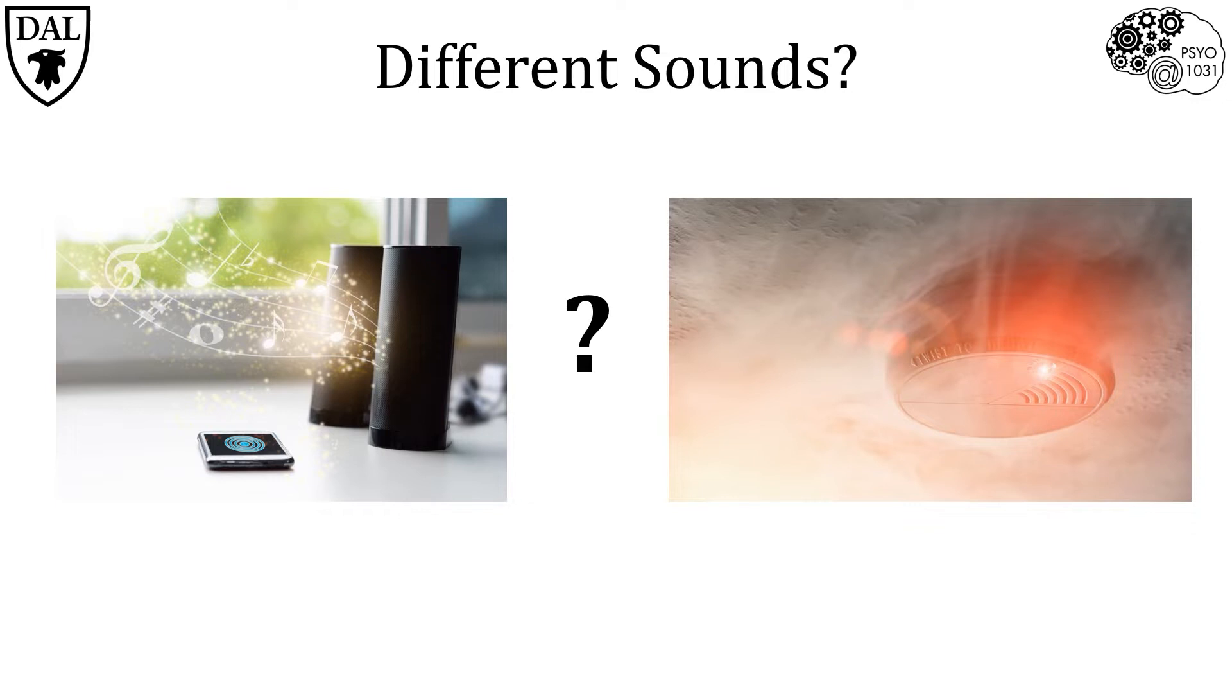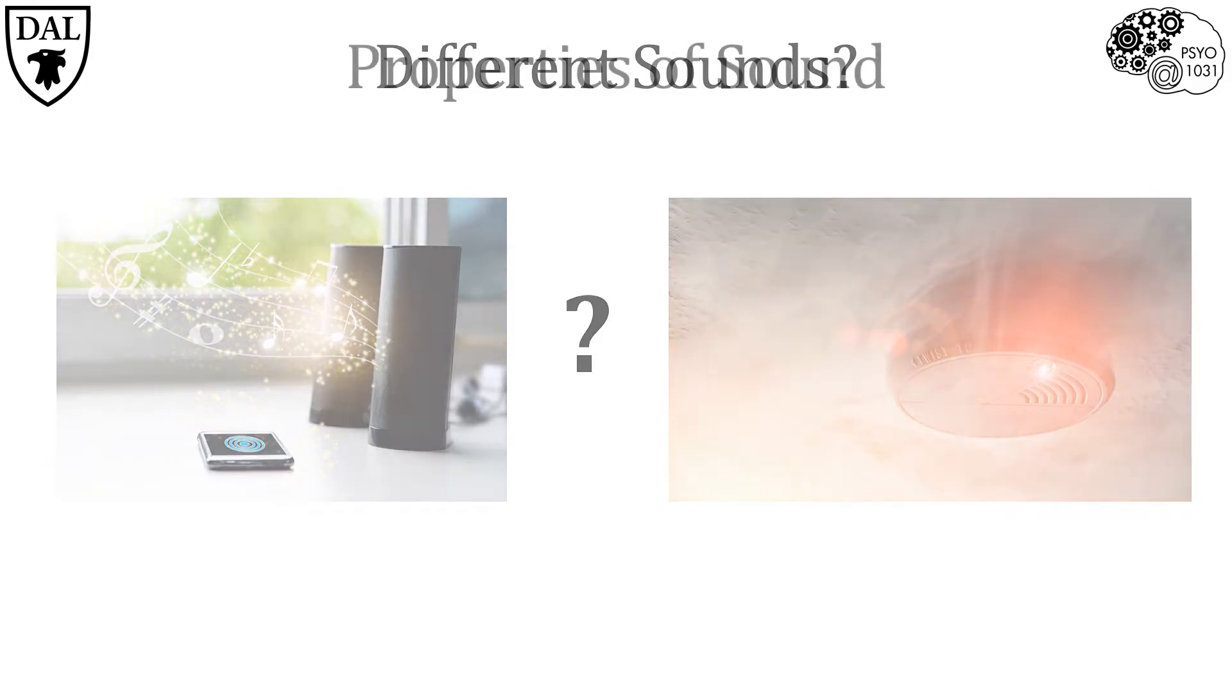But before getting into how the cochlea achieves the discrimination of different sounds, let's briefly review the properties of sound waves. For now, we'll focus on two of the major properties of sound: frequency and amplitude.